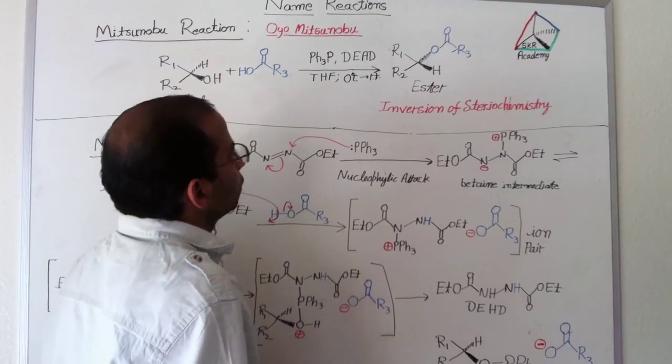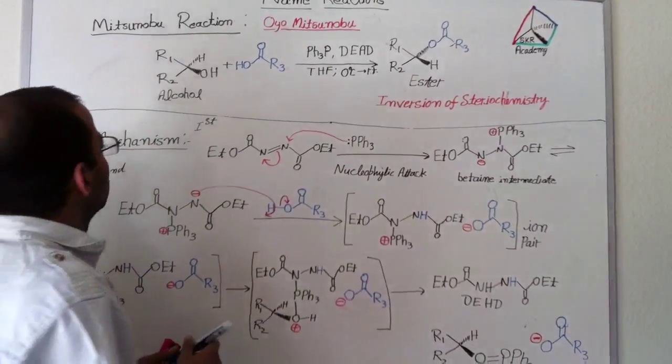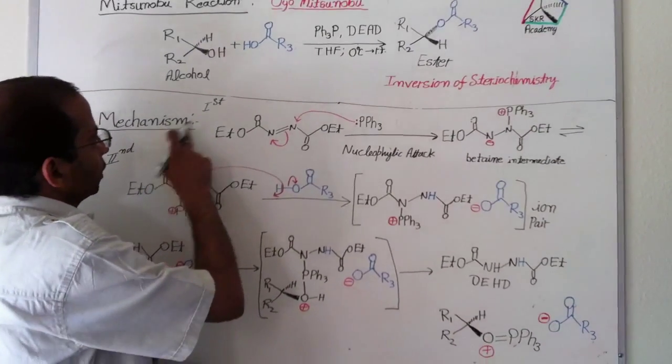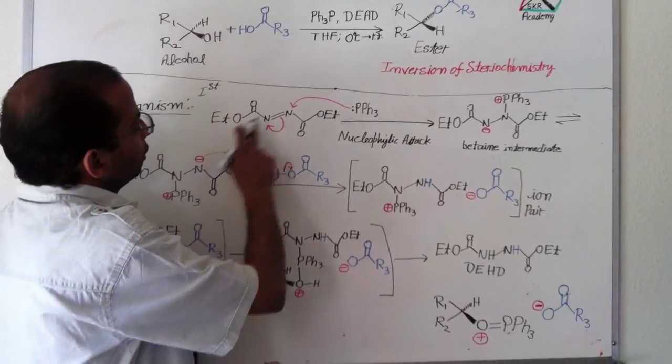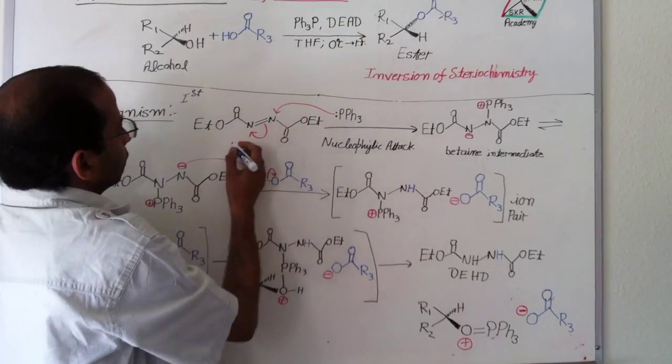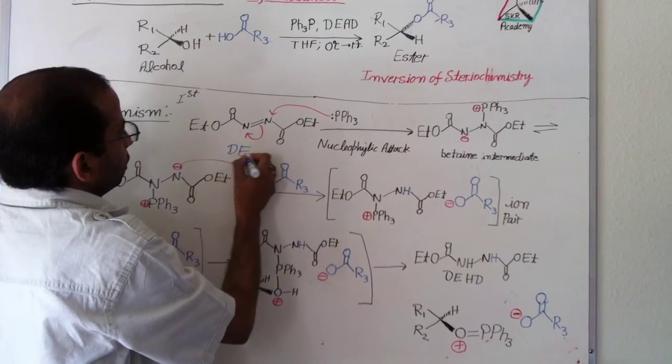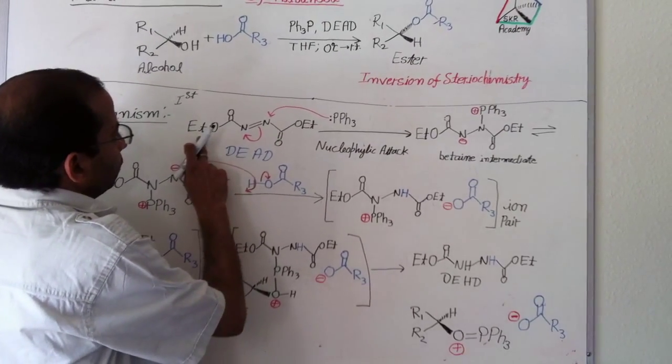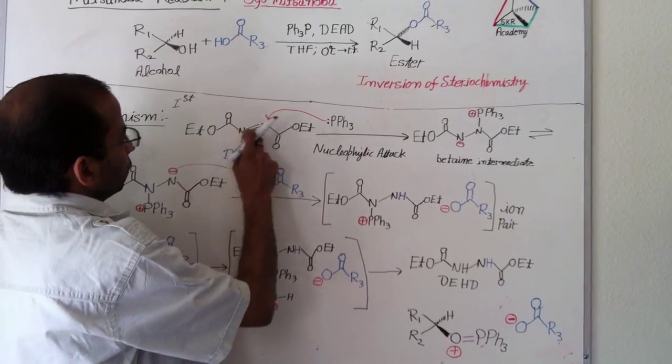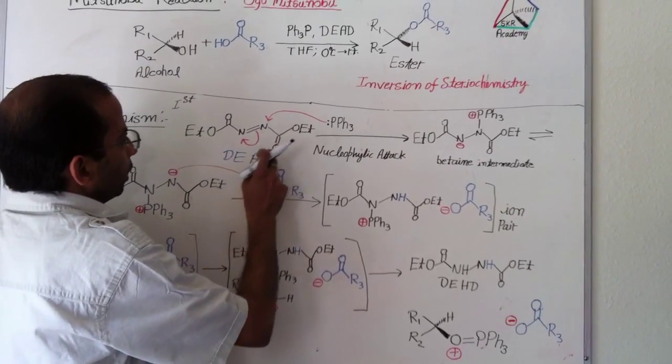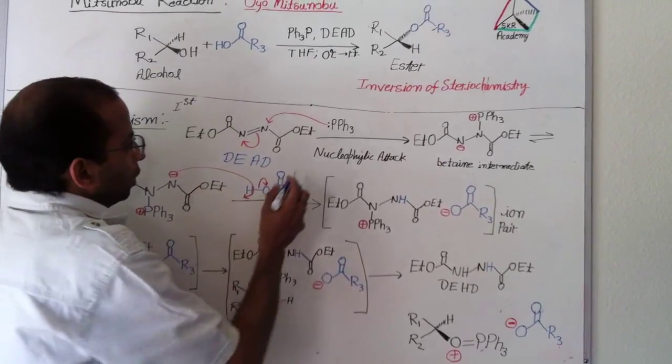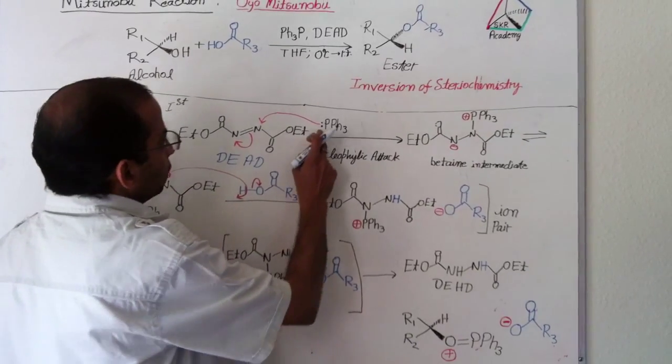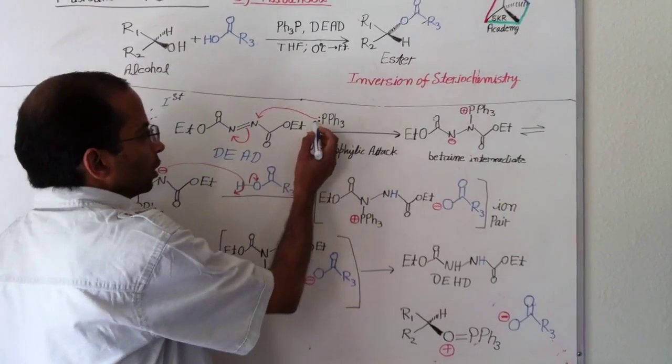Let's see its reaction mechanism, how this reaction takes place. Here I wrote this reaction mechanism. First step, what happened? This is DEAD. Diethyl azo, this nitrogen-nitrogen bond is azo and dicarboxylate. In first step, the triphenylphosphine attacks.